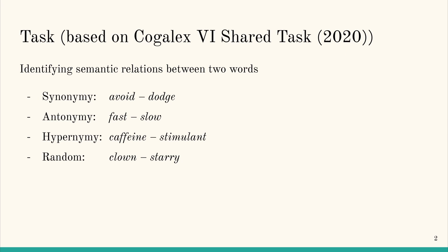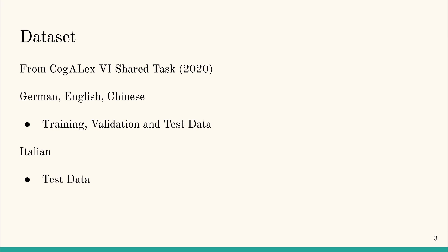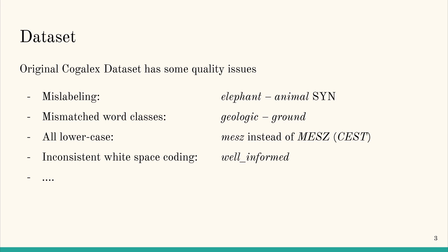We used the data from the COGALAX 6 shared task, which was provided in English, German, and Chinese for training, validating, and testing. The data had some clear quality issues, however, as is often the case with semi-automatically labeled data. For example, mislabeling is quite common.